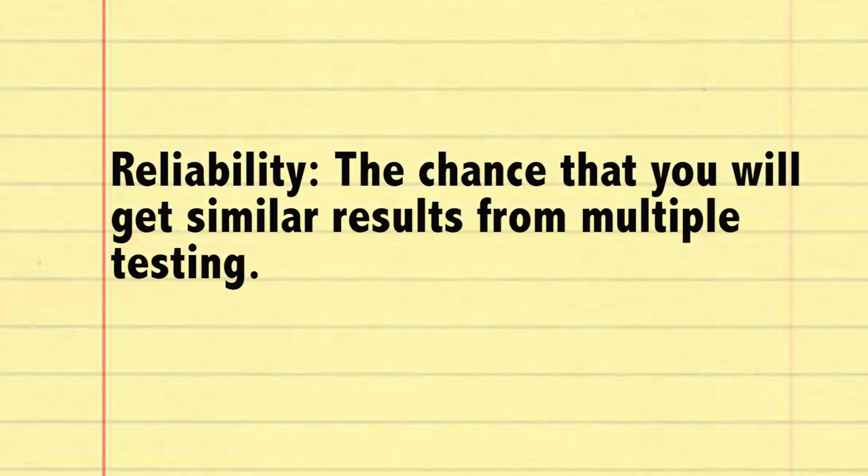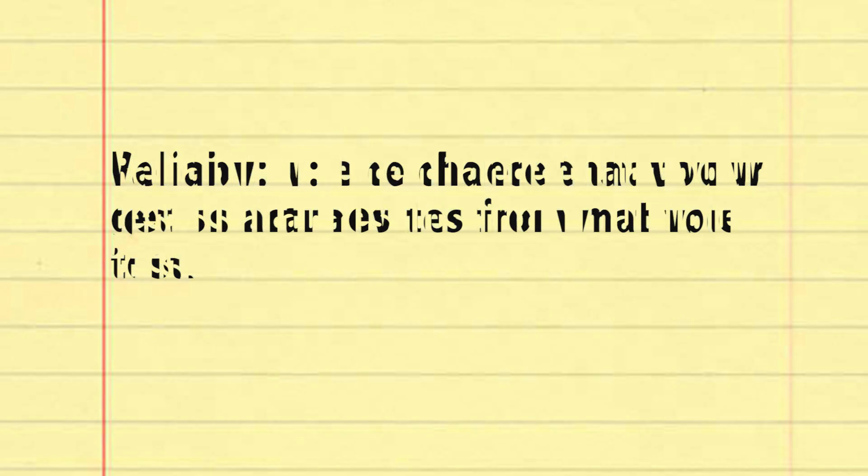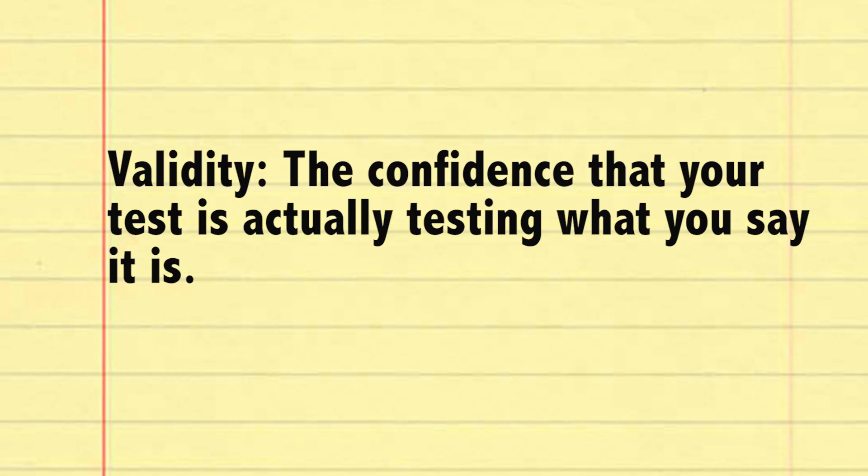By replicating one's observations, researchers can decide whether the basic findings extend to other participants or situations. This is called reliability — the chance that you will get similar results from multiple testings. Another method for determining if your test is a good one is called validity. This is the confidence that your test is actually testing what you say it is. Like if your participants were denied sleep and food the previous night, then who's to say your test is measuring sleep deprivation or hunger's effects on memory.